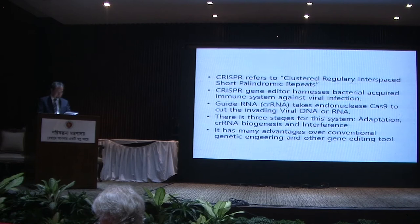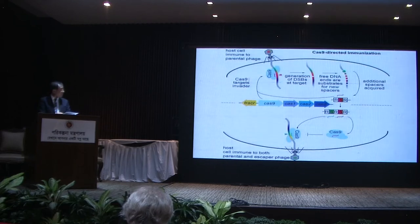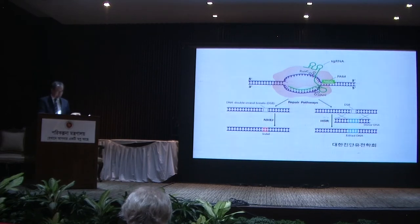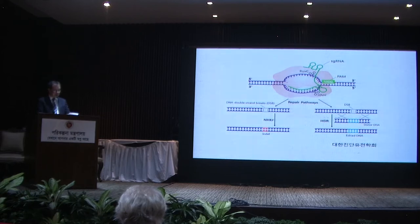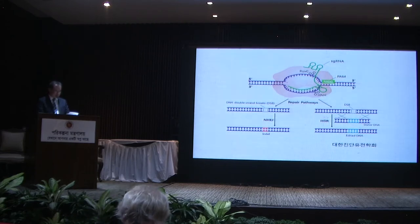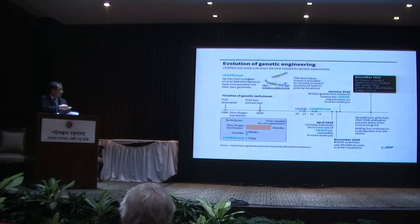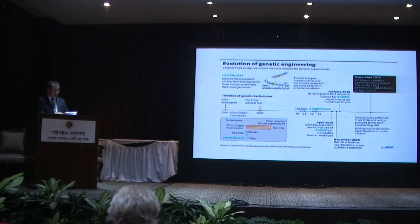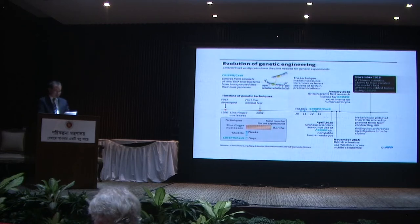CRISPR has many advantages over conventional genetic engineering and other gene editing tools. It allows scientists to cut out parts of the genetic material while leaving the rest untouched, and they can also add in new sections of DNA taken from another organism. Gene editing techniques — ZFN, TALEN, and most recently CRISPR — have been invented and used successfully in mammals and human cells in recent years.